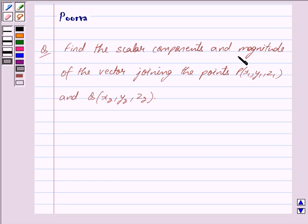Find the scalar components and magnitude of the vector joining the points P(x1, y1, z1) and Q(x2, y2, z2).